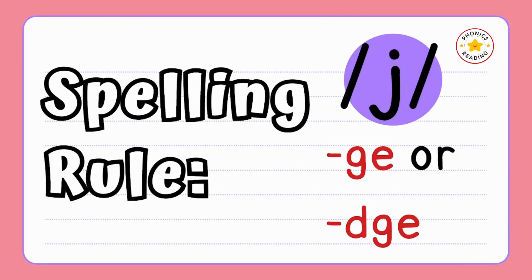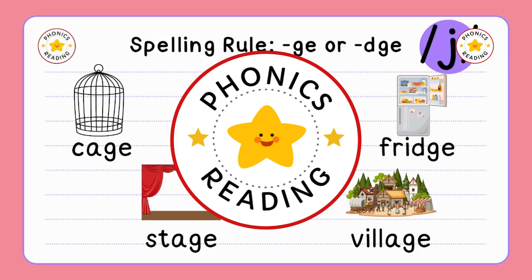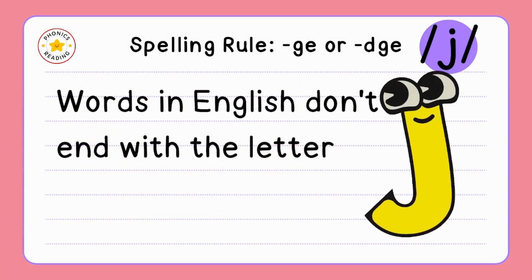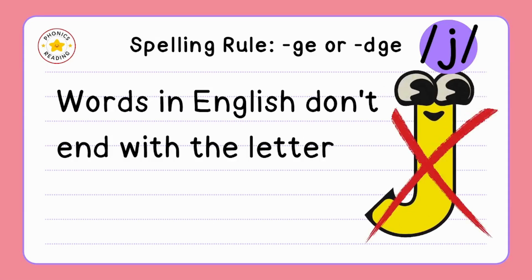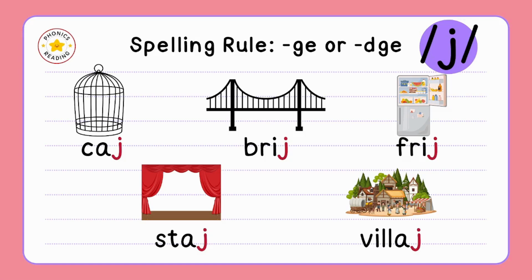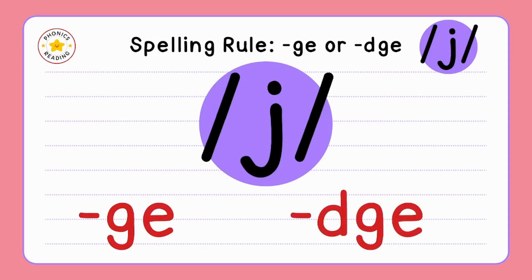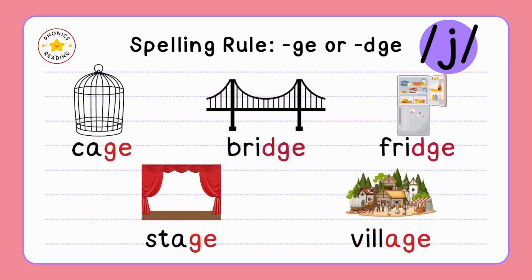Spelling rule: GE or DGE — what to use. Welcome to Phonics Reading YouTube channel. Cage, bridge, fridge, stage, and village — all these words end with a J sound. In some words the sound is written with GE, and in others it is written with DGE. In English, words don't end with the letter J, so we have to replace the J at the end with GE or DGE.